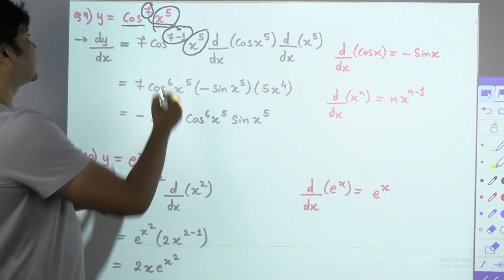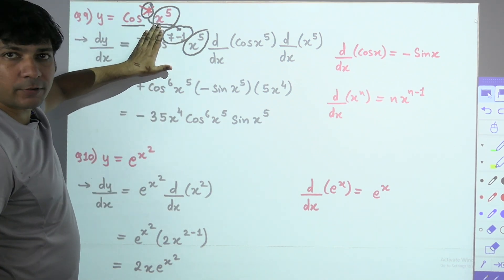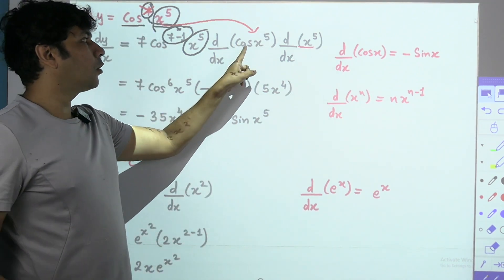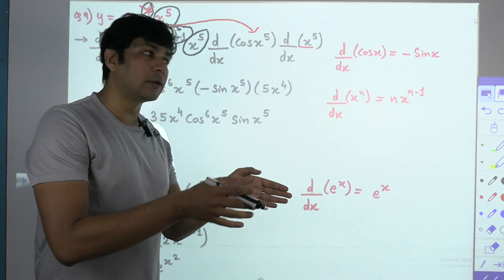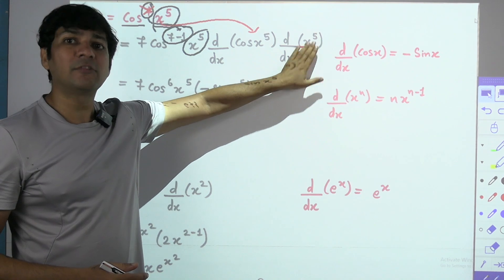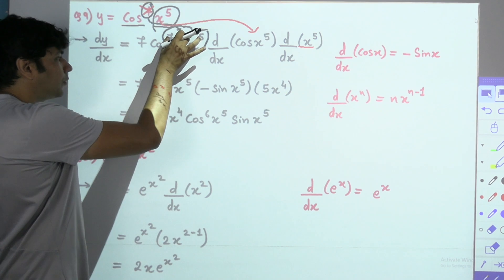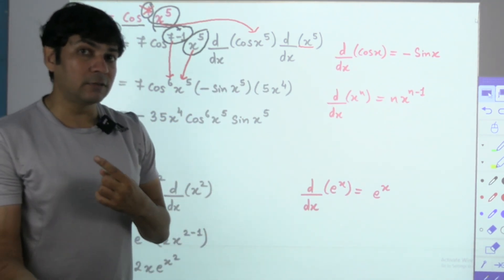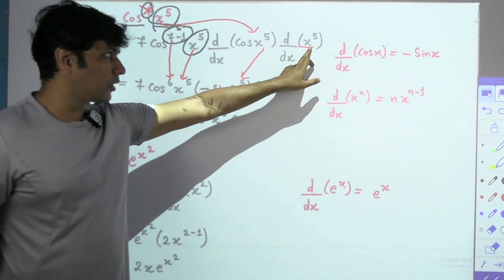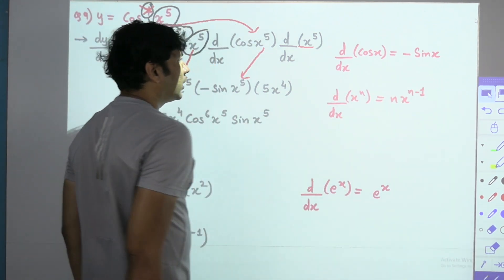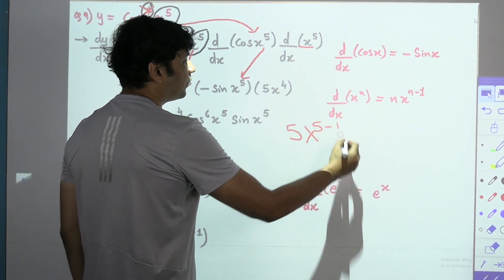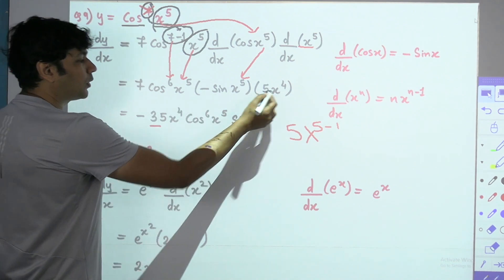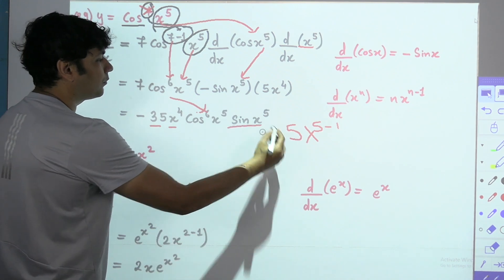After giving justice to the power, remove it from the picture. Now differentiate cos(x⁵) separately. The differentiation of cos of whatever is in the bracket is −sin of whatever is in the bracket. Then differentiate x⁵: write the power first, then the question again, decrement power by 1 — giving 5x⁴. There is one minus, so write −7·5 = −35, then x⁴, then cos(x⁵)^6 and sin(x⁵) in any trigonometry order. Final answer: −35x⁴ · cos⁶(x⁵) · sin(x⁵).